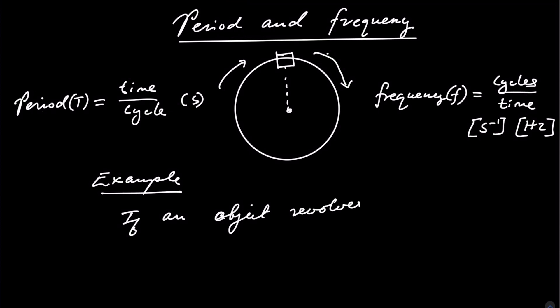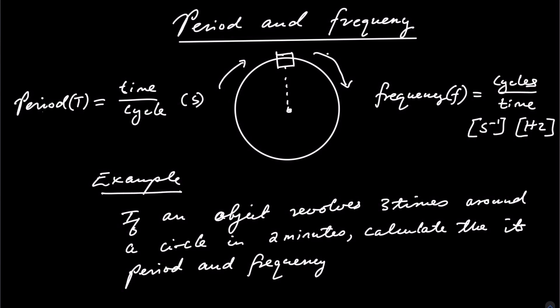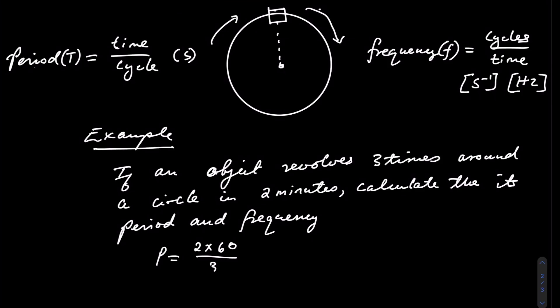If an object revolves three times around the circle in two minutes, calculate its period and frequency. So now we'll start first with the period. Period is basically the time, and what is the time? We said that it's two minutes, two times 60 seconds. And how many cycles did it take? It took three. So that will basically be 40 seconds to complete one full revolution. What about the frequency?